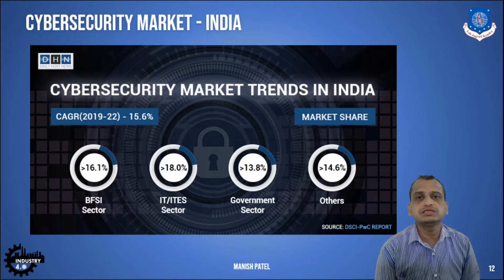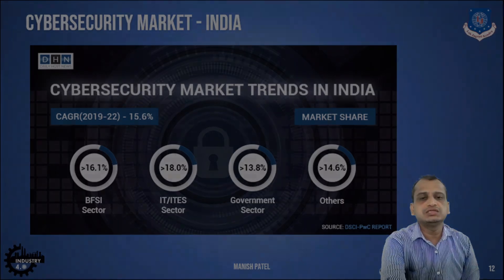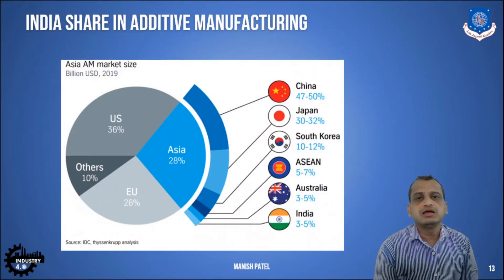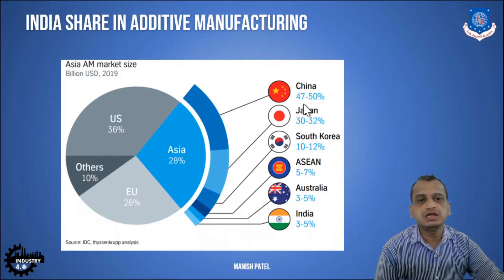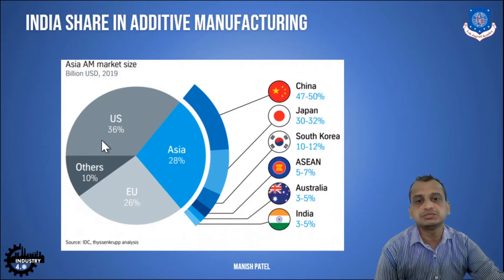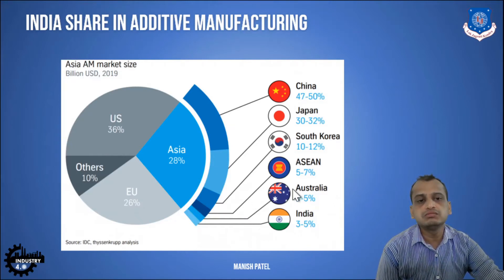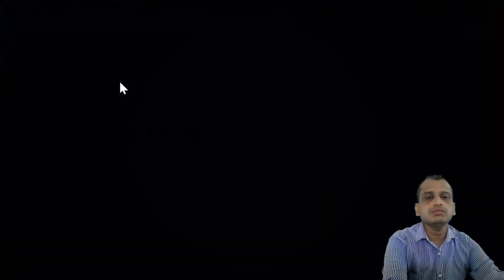Before discussing challenges, one more area is additive manufacturing, where India's share is almost 3 to 5 percent — not much. China is at almost 47 to 50 percent, even more than the US at 36 percent, based on 2019 figures. India is very slow in adopting additive manufacturing technology.